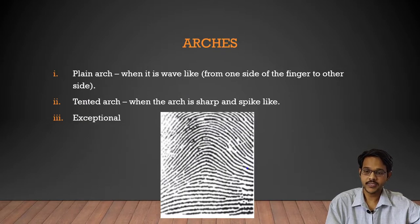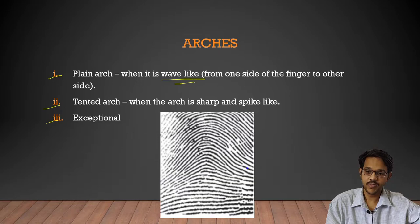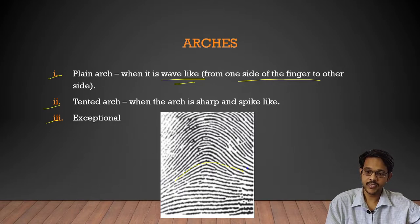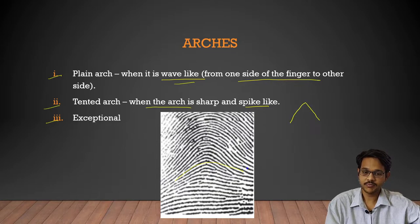Arches have three types: plain arches, tented arches, and exceptional arches. Plain arches are wave-like patterns running from one side of the finger to the other. Tented arches are sharp or spike-like, prominent as spikes, compared to plain arches which are more wave-like.